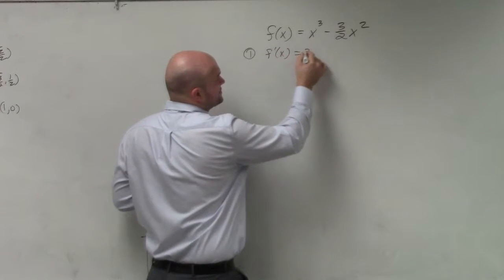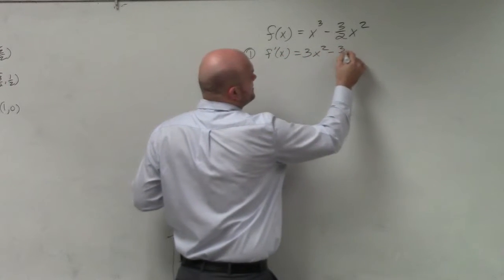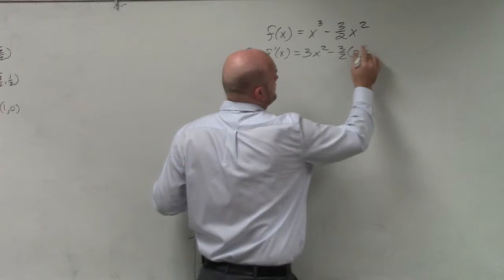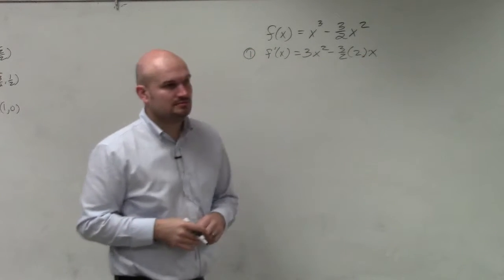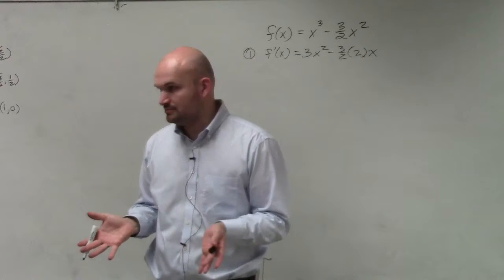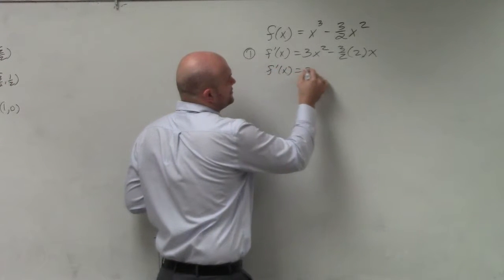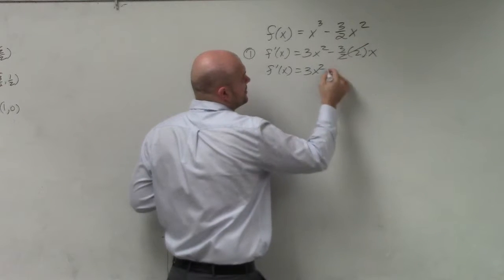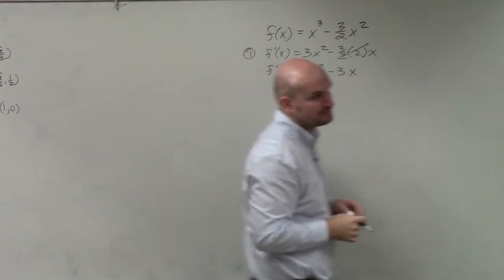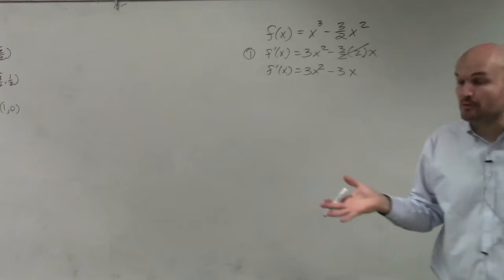f prime of x is equal to 3x squared minus 3 halves times 2x. Everybody follow me? So we go ahead and find the derivative f prime of x is equal to 3x squared minus 3x. Step one, we found the derivative.